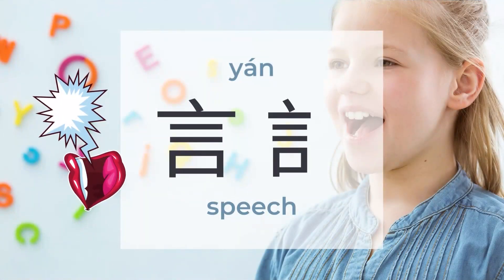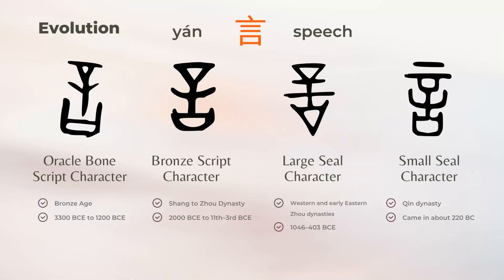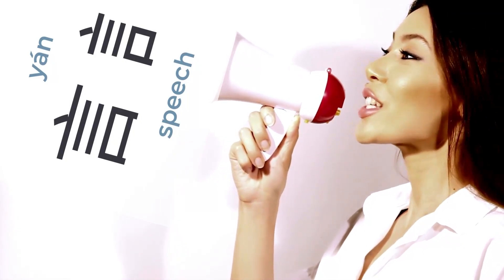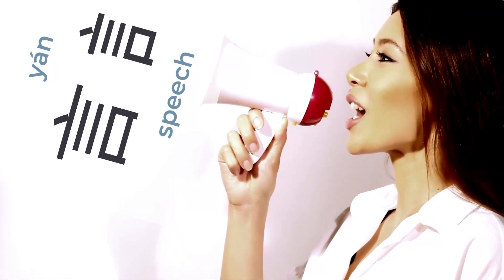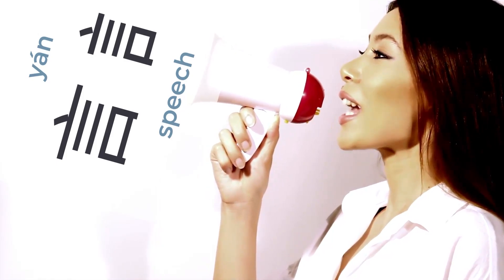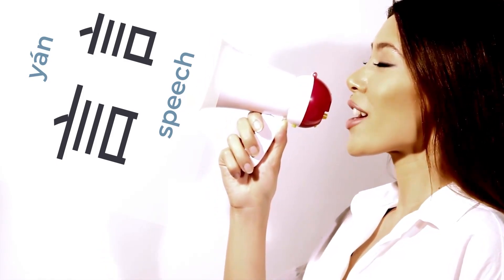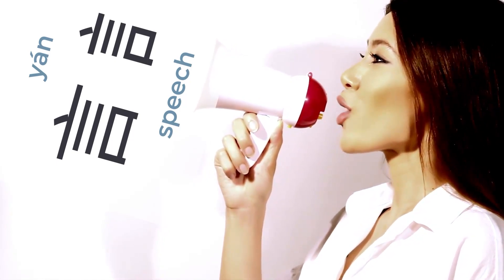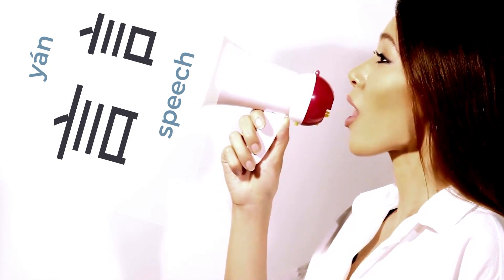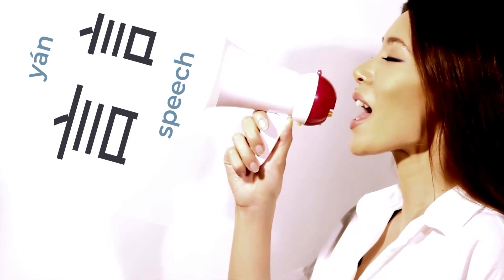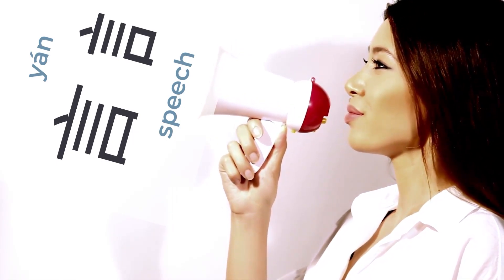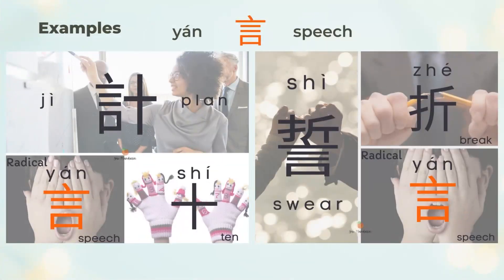言 means speech. There are around 861 characters to be found under 言. 言 is a pictogram. 口 (mouth) shows on the bottom of 言 (speech), and 口 is also a radical. 言 relates to 口 (mouth), and 言 often shows on the left side of characters, becoming skinnier.